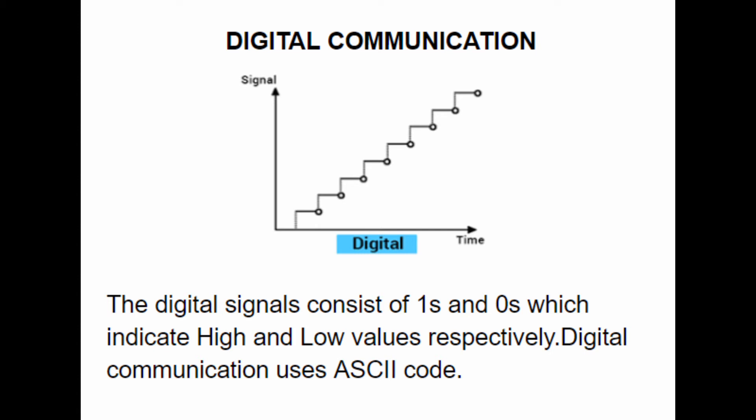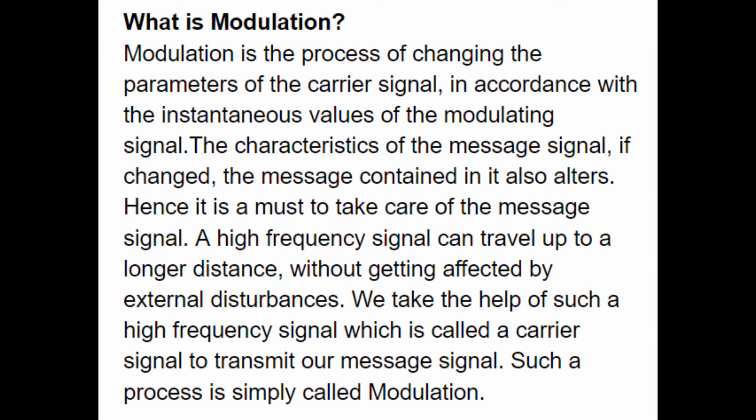Now we move to our next topic: modulation. What is modulation? Modulation is a process of changing the parameters of the carrier signal in accordance with the instantaneous value of the modulating signal. The characteristics of the message signal, if changed, the message contained in it also alters. Hence it is a must to take care of the message signal. A high frequency signal can travel up to a longer distance without getting affected by external disturbance. We take the help of such a high frequency signal, which is called a carrier signal, to transmit our message signal. Such a process is simply called modulation.